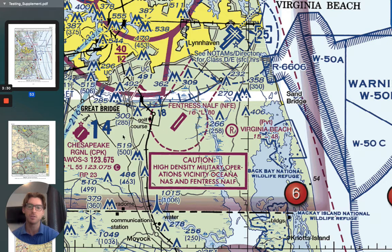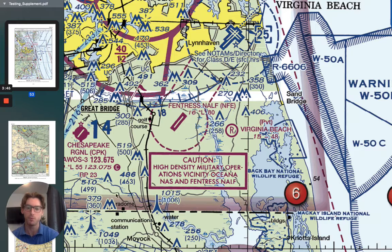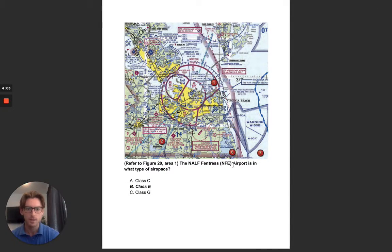Now, let's shift our eyes over to Chesapeake just to give you an example. It's the same magenta color — the airport is depicted as a magenta color — but there is none of that dashed line. That means it is Gulf airspace here, and then it's Echo further up to 700 feet. Remember, when it's that dashed line, don't get confused by these two magenta colors of how the airport is depicted. You need to look at what's around the airport for that airspace. So the answer is B, Class E airspace.